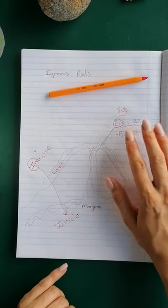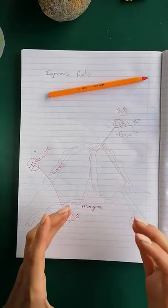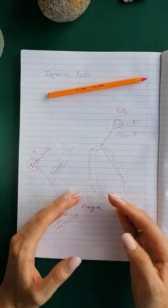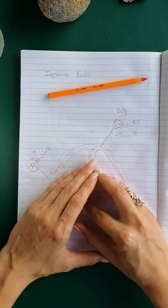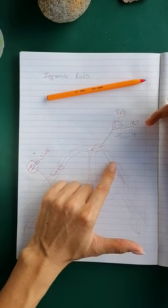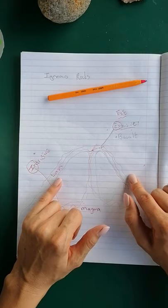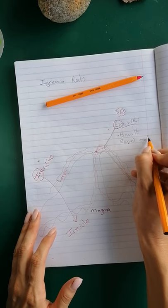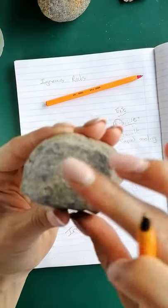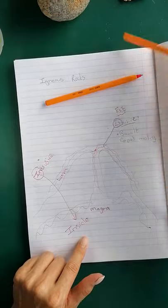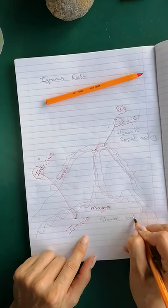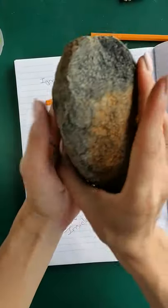With an extrusive igneous rock, temperature plays a big role. Inside the earth, below the crust, my rocks are still molten — that means it's really, really hot. Because it's below the crust, it stays hot for quite some time. But as soon as lava flows out onto the surface, it cools really, really rapidly. And because of this rapid cooling, I have a very massive texture and I can't identify the individual crystals.